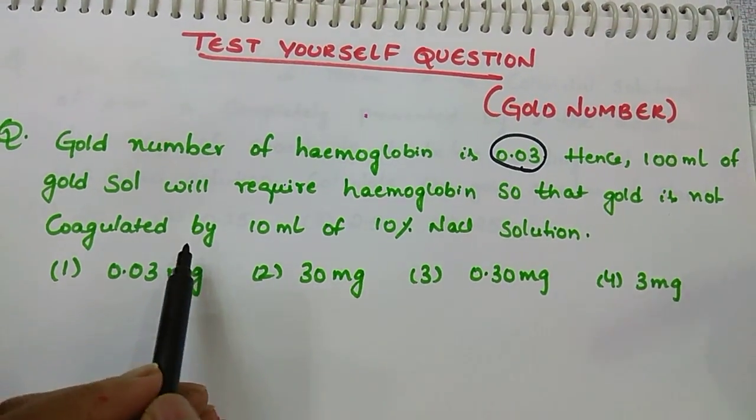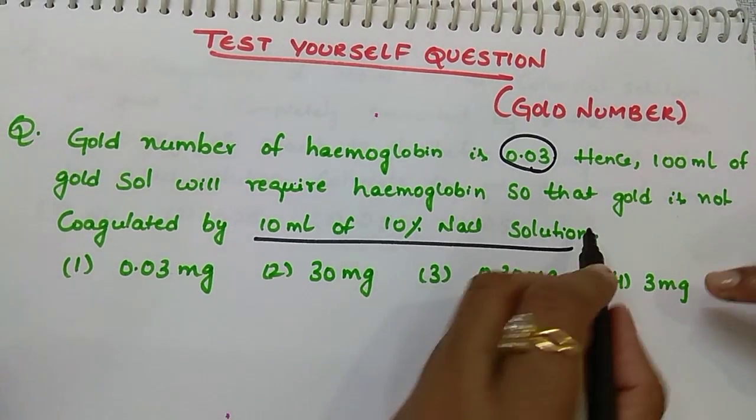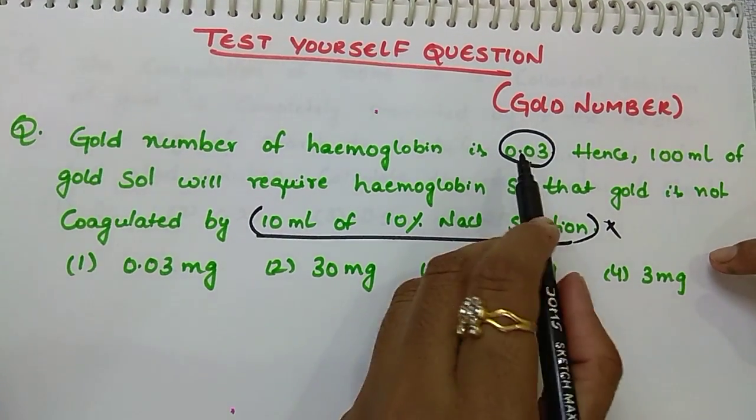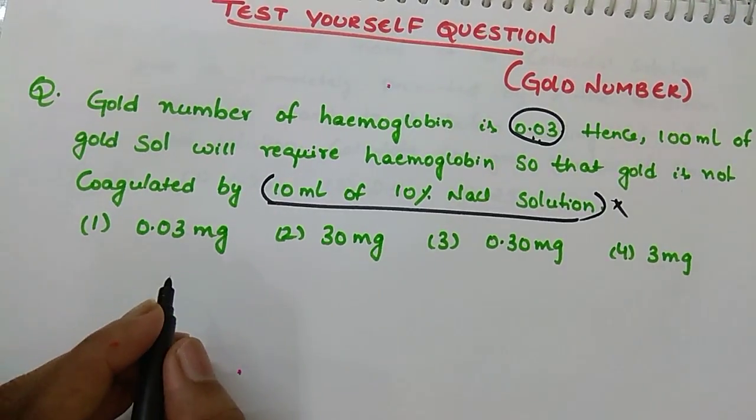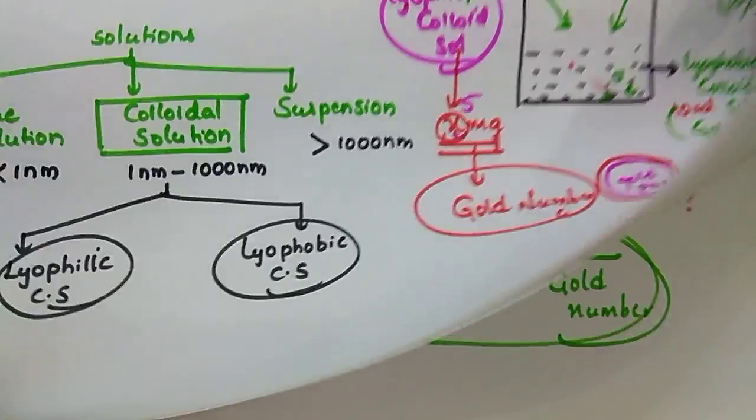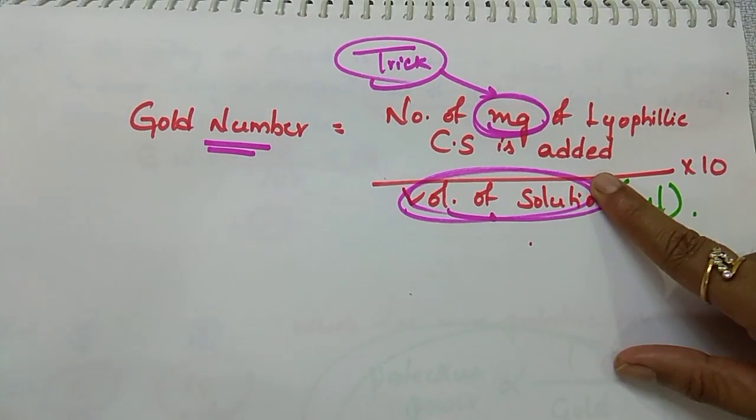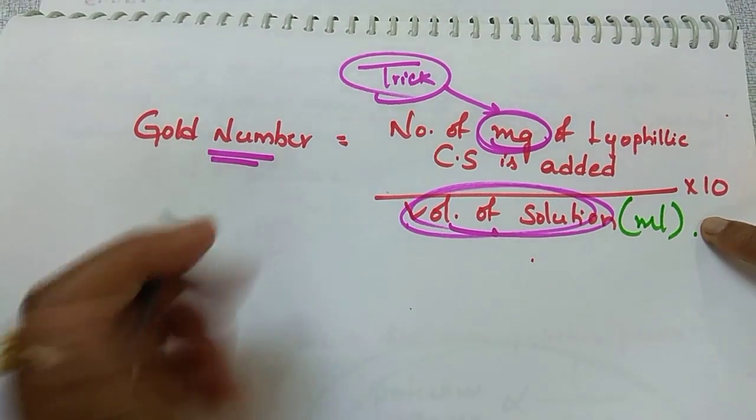When you add 10 ml of 10 percent NaCl, that data is not required. As per our trick, what we want is gold number and volume. What is our formula? Gold number equals number of milligrams of lyophilic colloidal solution added divided by volume of solution into 10.